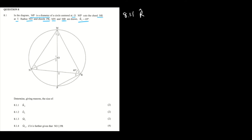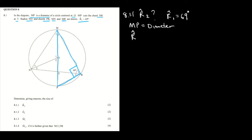For 8.1.1, we want to identify angle R2. We know that angle R1 is equal to 69 degrees and MP is a diameter. Angle R1 plus R2 is actually equal to 90 degrees combined. The reason is angles on a semicircle.